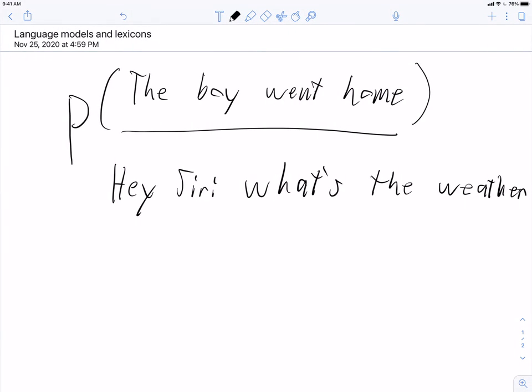So, the boy went home. Or, hey Siri, what's the weather? Or, she had your dark suit. So, I'm not going to write out all three of those, but we'll put placeholders. So, this is hypothesis one, hypothesis two, and hypothesis three. Hypothesis one is, she had your dark suit in greasy wash water all year. Hypothesis two is, she had your dark soup in grease watched all year. And hypothesis three is, G. Hodge, your tar suit increased. What's Walter's oily ear?